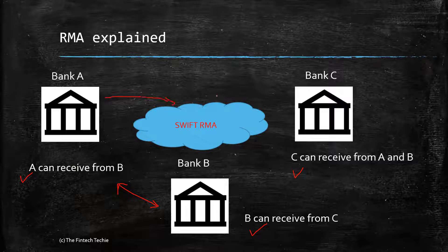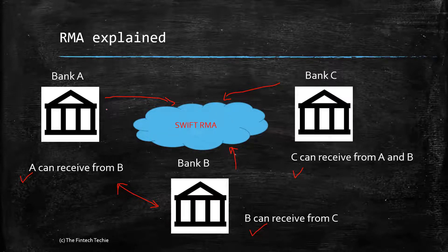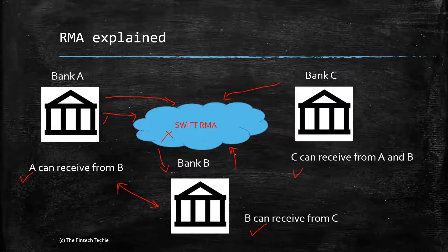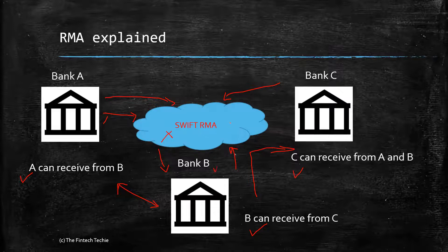These rules are also fed into the RMA. Now, whenever a message is sent — let's assume bank A tries to send a message to bank B — the filter in bank A gets applied. And even if the message slips into Swift, Swift RMA ensures that the message doesn't get passed on to B, because per the mandate, B can receive only from C and nobody else. Similarly, if B wants to send a message to C, it passes the filter in B and also passes the filter in Swift RMA, so C can receive the message from B.